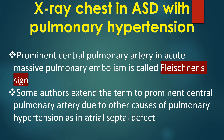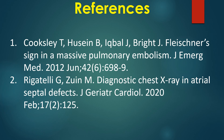Prominent central pulmonary artery in acute massive pulmonary embolism is called Fleischner's sign. Some authors extend the term to prominent central pulmonary artery due to other causes of pulmonary hypertension, as in atrial septal defect. Here are a couple of journal references on Fleischner's sign.